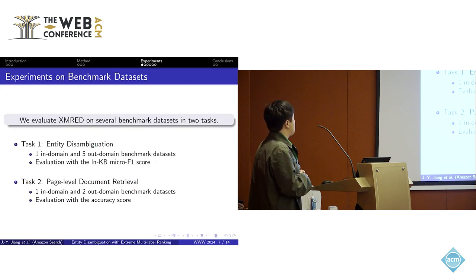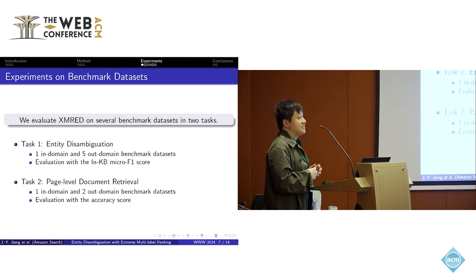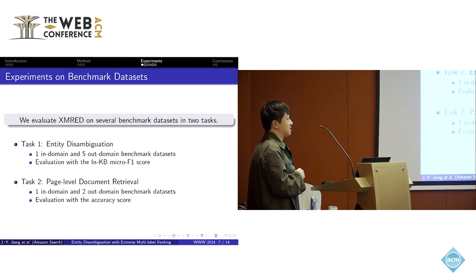For the experiments, we evaluated our method on several benchmark datasets in two tasks. The first one is entity disambiguation. It consists of one in-domain and five out-of-domain benchmark datasets, and we evaluate with the knowledge-based micro F1 score. The second task is page-level document retrieval. It consists of one in-domain and two out-of-domain benchmark datasets, and it is evaluated by the accuracy scores.